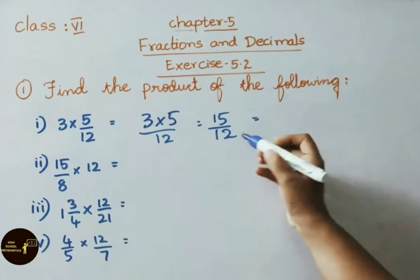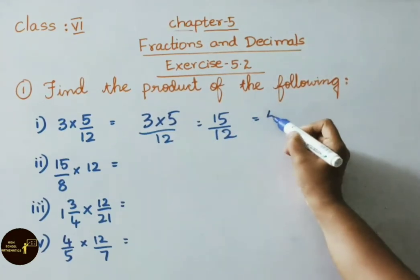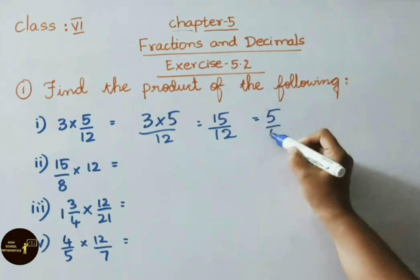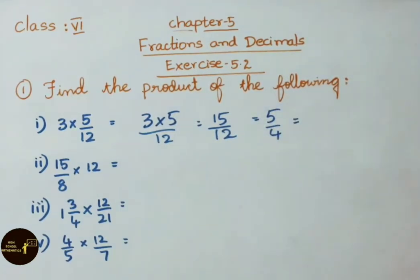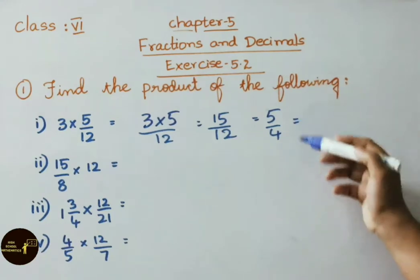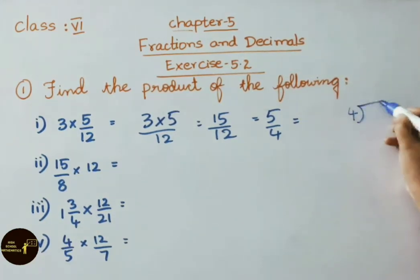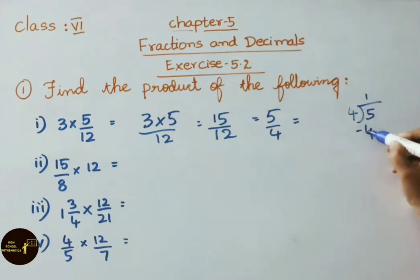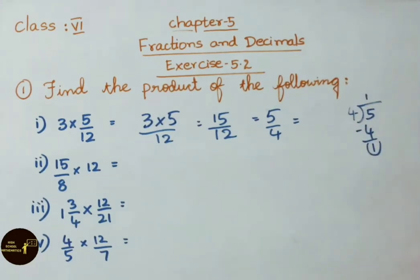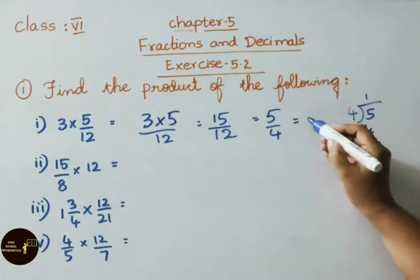In the 3 times table, 3 fives are 15 and 3 fours are 12. So we get 15 by 12, which simplifies to 5 by 4. Dividing: 4 ones are 4, 5 minus 4 is 1. So the answer is 1 and 1 by 4.